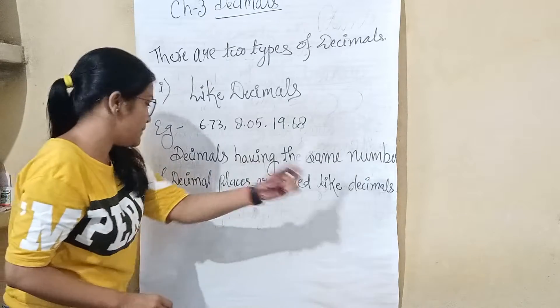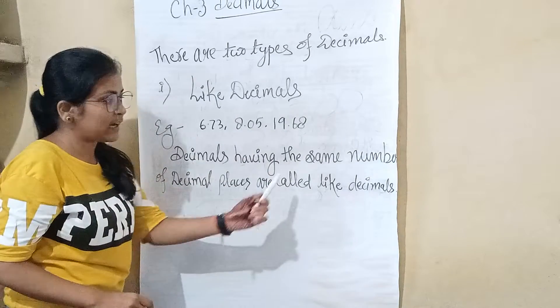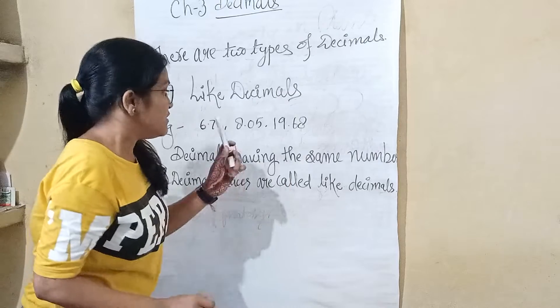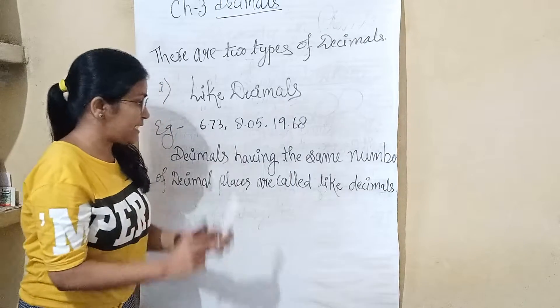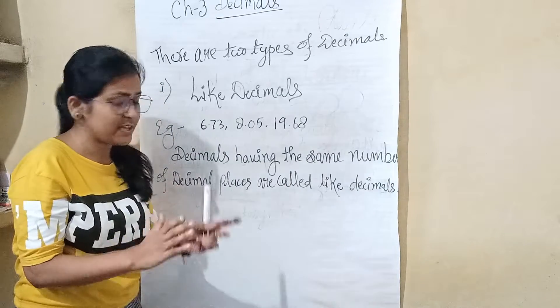Decimals having the same number of decimal places are called like decimals. They have the same number of digits in the same decimal places.